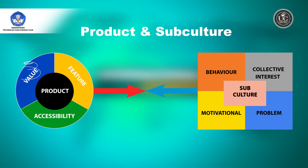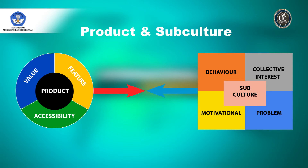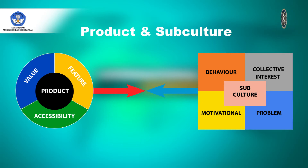Dari nilai tersebut, value-nya apa — value dari produk tersebut. Lalu fiturnya, apa saja yang dapat diberikan dari produk tersebut. Lalu accessibility dari produk tersebut. Sedangkan di sisi kanan, teman-teman dapat lihat ada behavior, collective interest, motivational, dan problem.